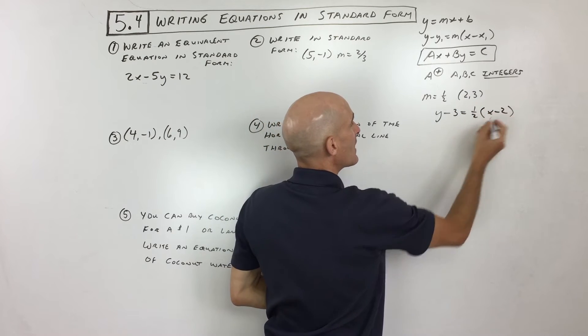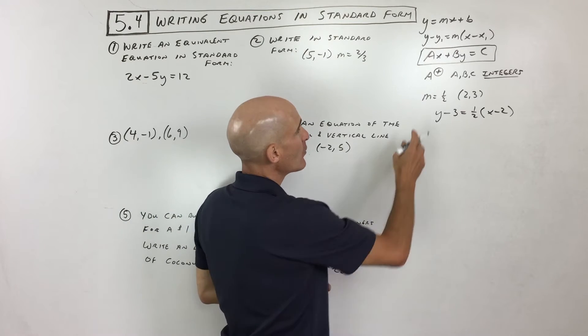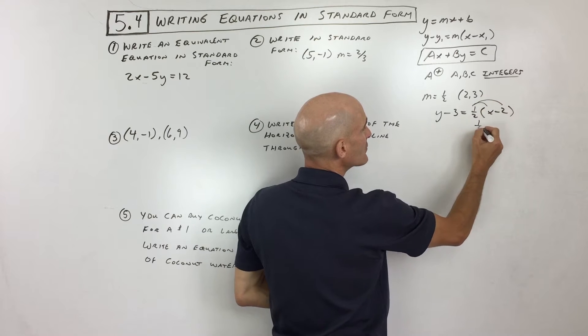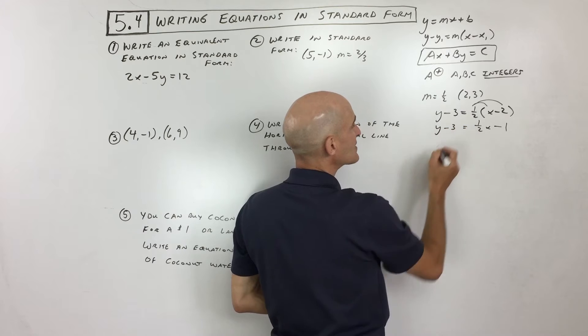We've got the slope, and so we can write it just like that. It just takes a half a second. But now we want to rearrange it into the standard form. So what I'm going to do is I'm going to distribute the one-half. So that's one-half x minus 1 equals y minus 3.